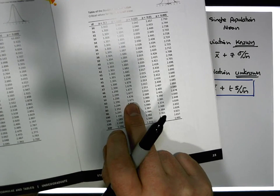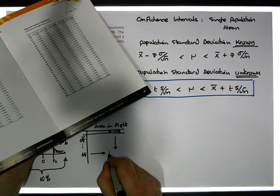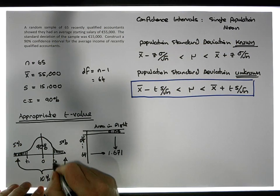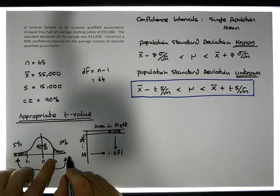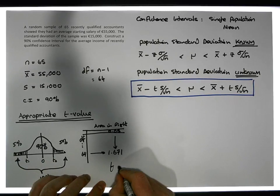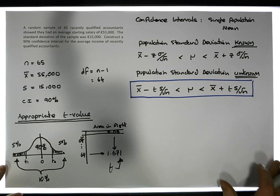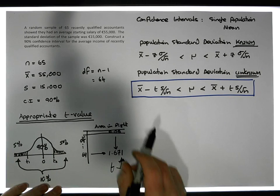60 is closest to 64, so we're going to take 1.671 as our critical value, or as the demarcation point for five percent of the area being in the right tail. This is the t-value that we require. Now we have all the information to construct a 90% confidence interval.